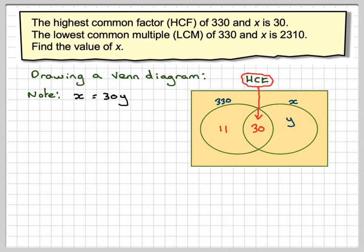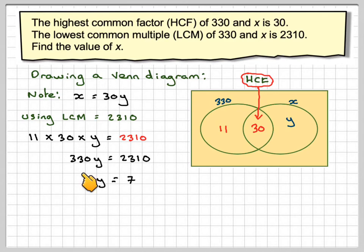Using the fact that the LCM is 2310, then 11 times 30 times y must be equal to 2310. So that gives me that 330y is 2310, and then divided by 330, we're going to get that y is equal to 7.